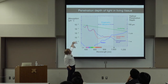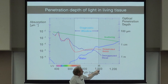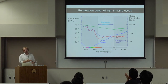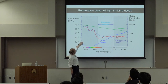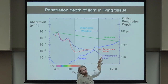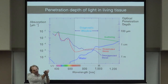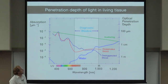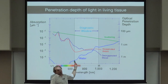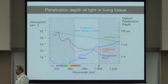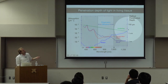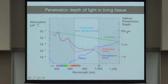Scattering is reduced at longer wavelengths — so applying longer wavelengths reduces scattering in tissue. But water absorption increases in the infrared, so at some point water absorption dominates. The trade-off defines a so-called diagnostic window in the near infrared, where you achieve the highest penetration depths — up to several hundred microns in tissue.